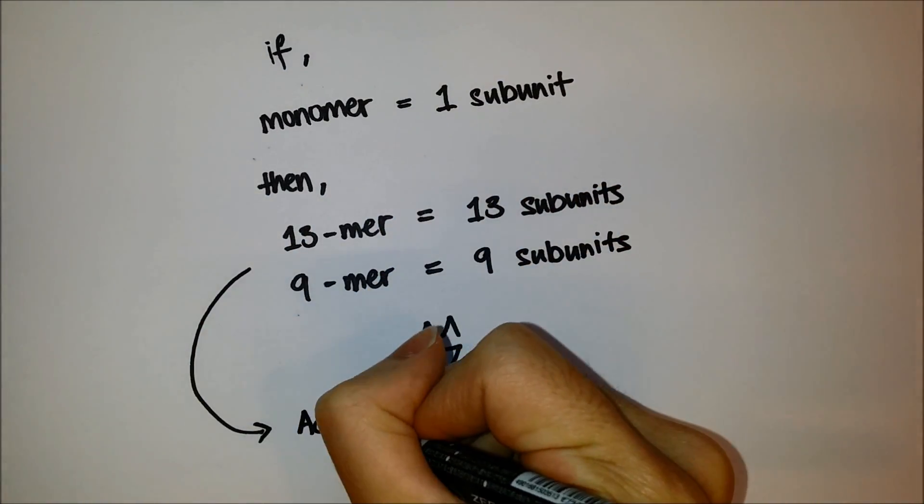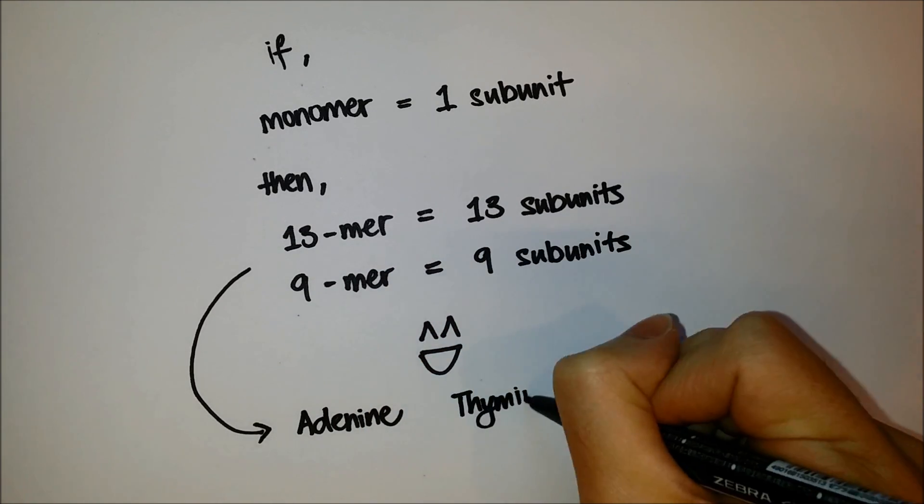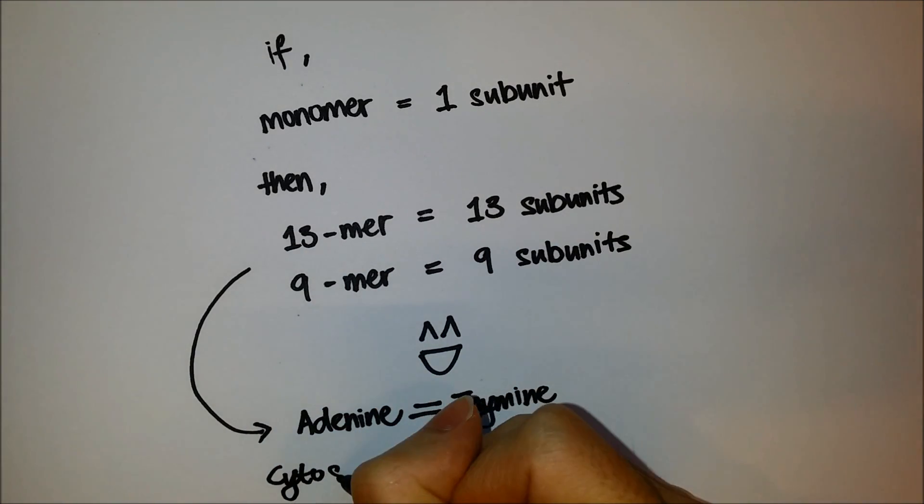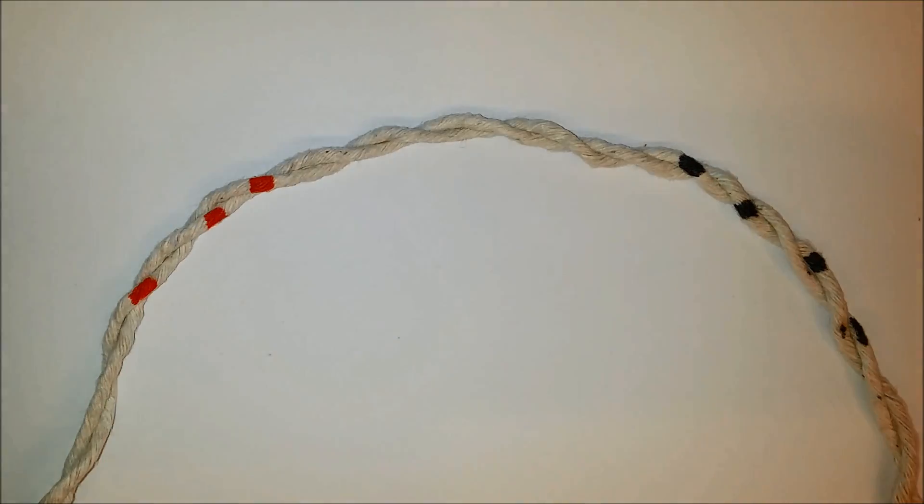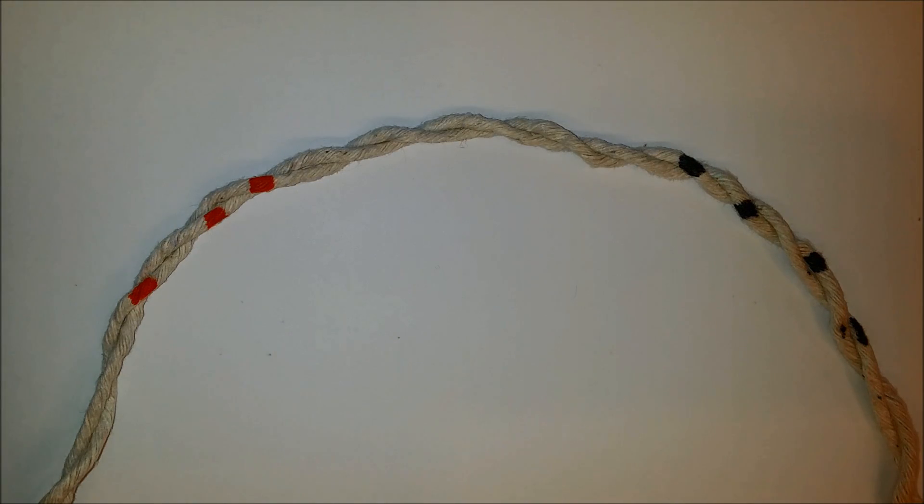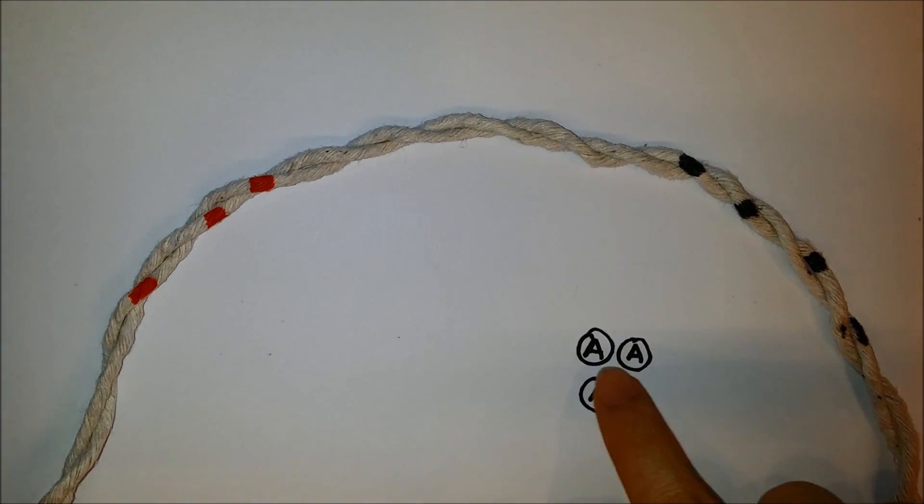The 13-mers have many A-T base pairs, which have a weaker double hydrogen bond compared to C-G base pairs, which have triple hydrogen bonds. Now that it's easier to visualize the structures at the molecular level, let's illustrate the process of DNA replication in E. coli.